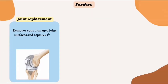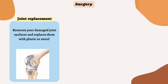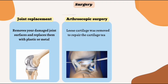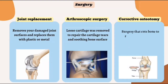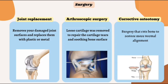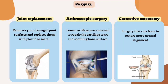As for surgical options, the first is joint replacement surgery, where the surgeon removes damaged joint surfaces and replaces them with plastic or metal components. The next is arthroscopic surgery, in which loose cartilage is removed to repair cartilage tears and smooth bone surfaces. The last is corrective osteotomy, a surgery that cuts bone to restore more normal alignment.